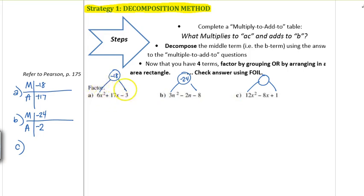Instead of doing what multiplies to C and adds to B, we have to multiply the a and the C together to get negative 18. We're going to do the same thing as before: what multiplies to negative 18 and adds to 17? It's going to be 18 times negative 1, because 18 minus 1 is 17.